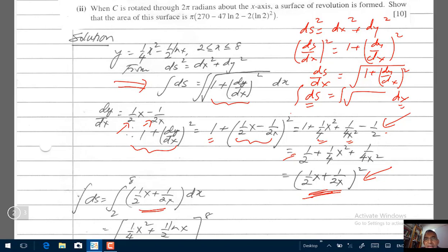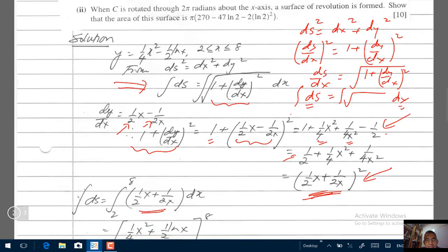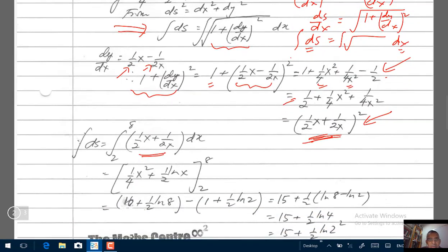Our limits, x going from 2 to 8. They gave me that in the question. 2 to 8. The integration is pretty simple. I have a half x here. So increase the power by 1. Bring it down. I'll get 1 over 4x squared. And then I have a half here. And 1 over x, I'll have a half log x.